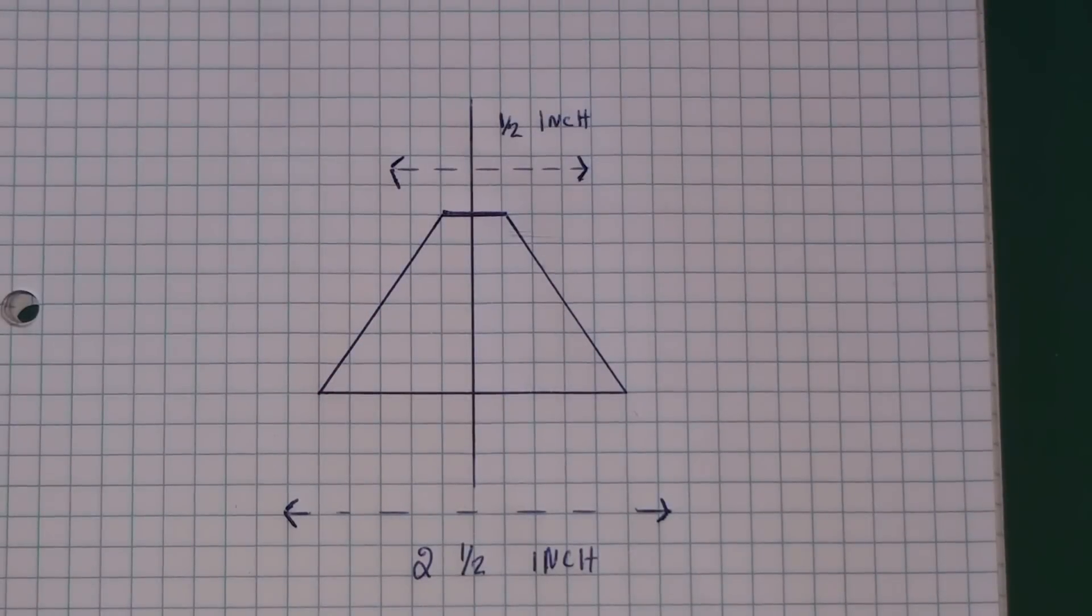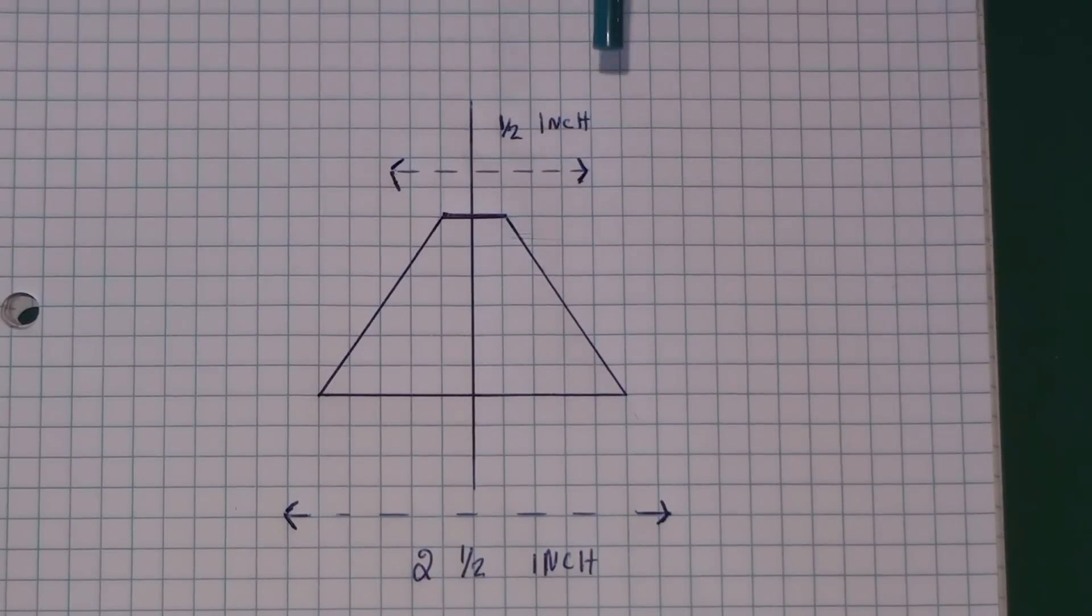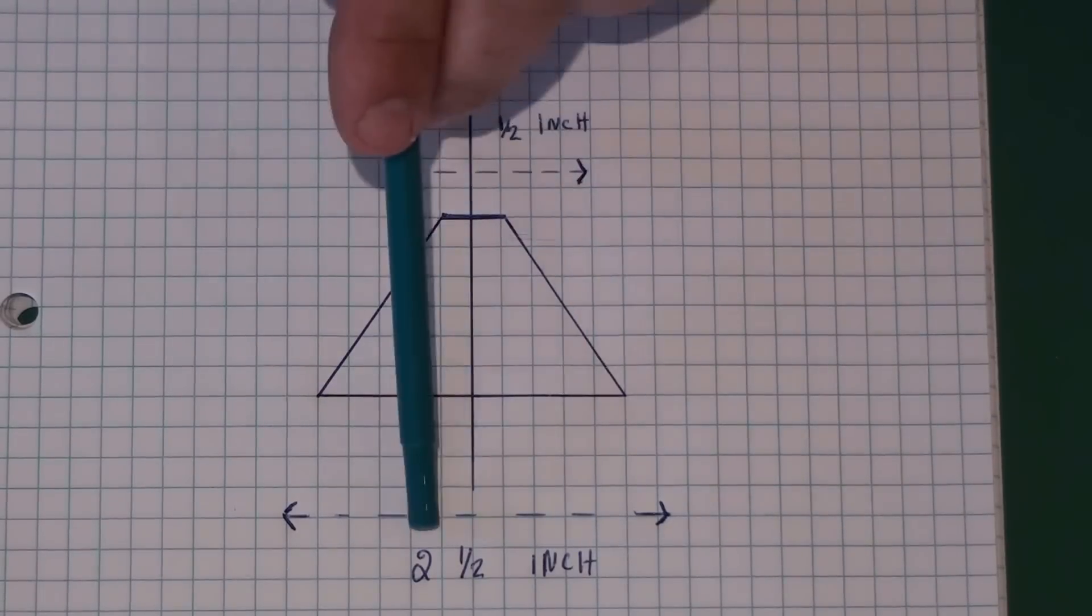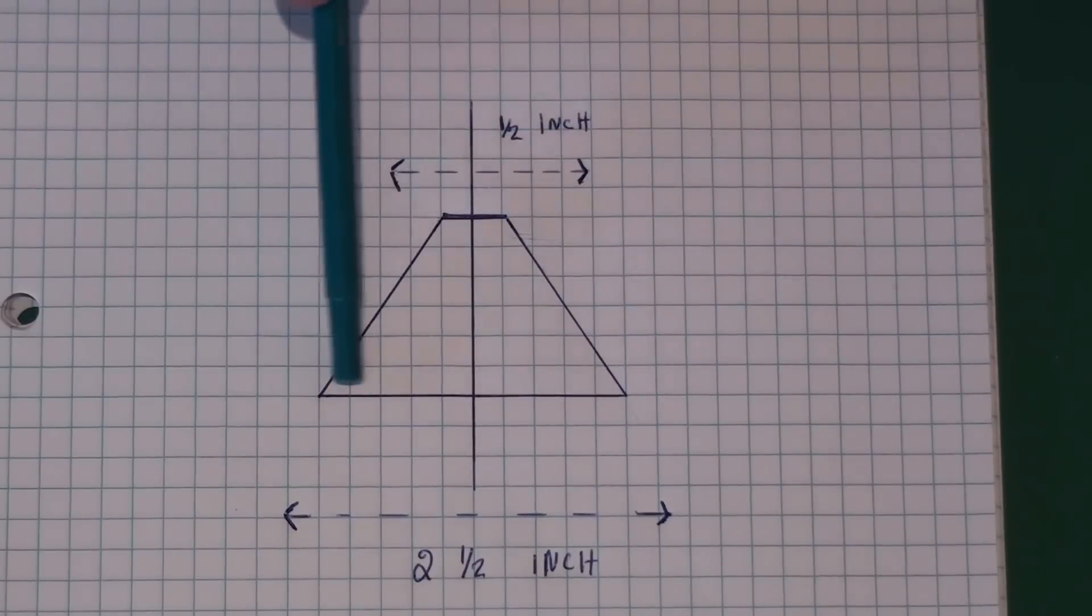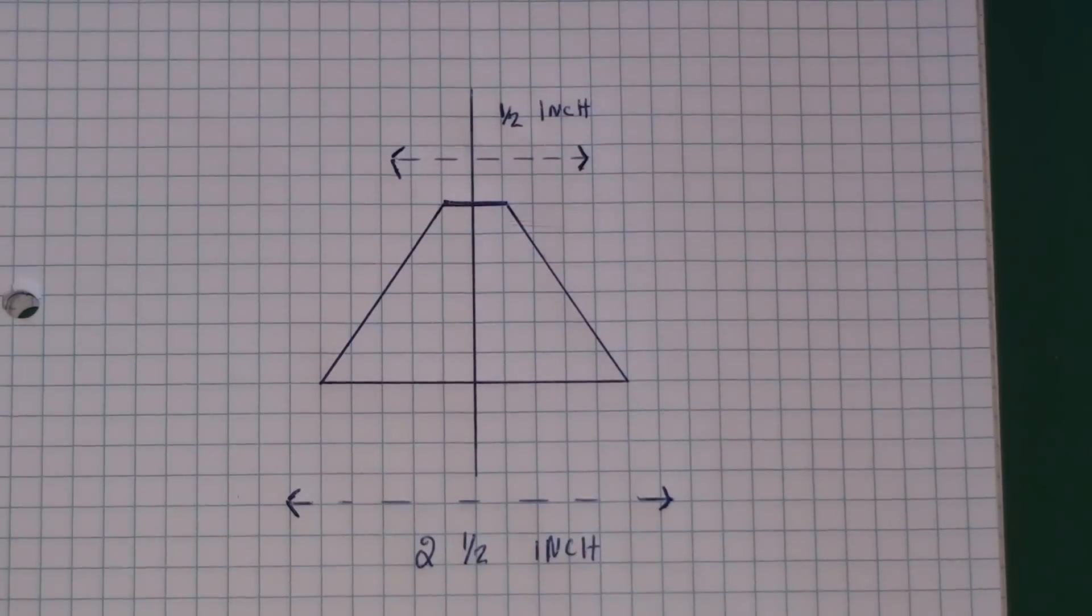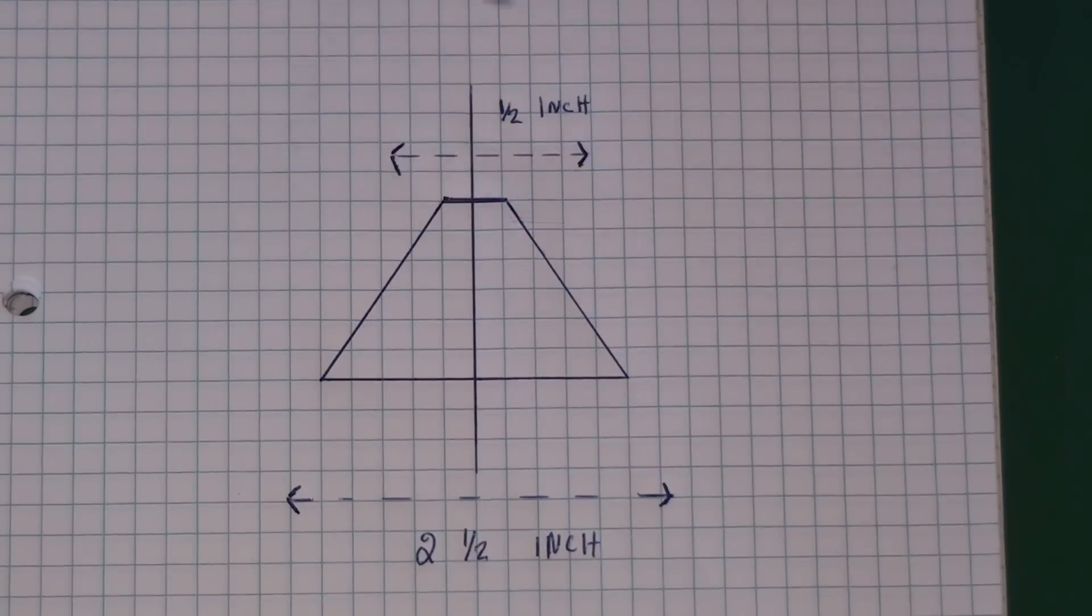So these are the measurements for my triangle that I need. It's half inch on the top, over here, the top line. And two and a half inch for the bottom line. And basically I've made a line in the middle and then I've shaped my triangle.